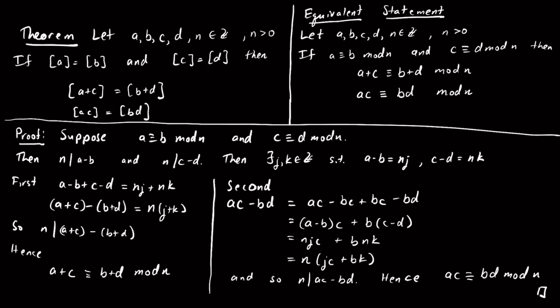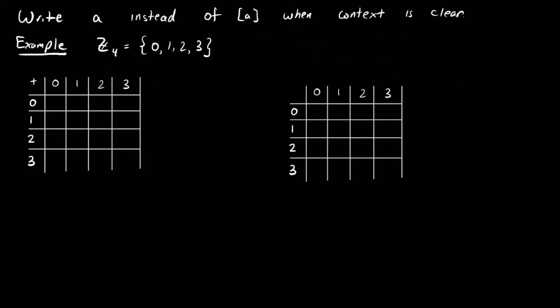Let's do a few more examples. One thing to note: often I'll just write a instead of [a] when the context is clear, since the brackets get cumbersome. So when working in Z mod 4, I'll write the elements as 0, 1, 2, 3 — without brackets — understanding these represent equivalence classes.